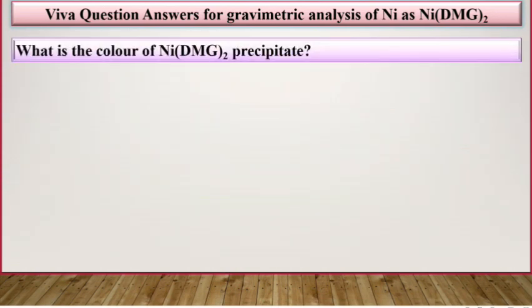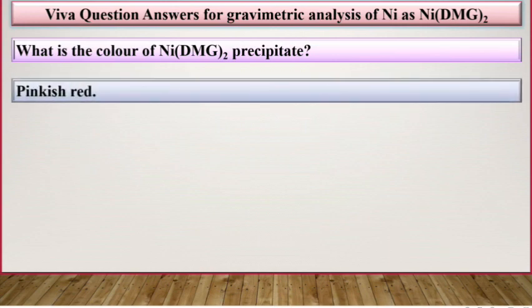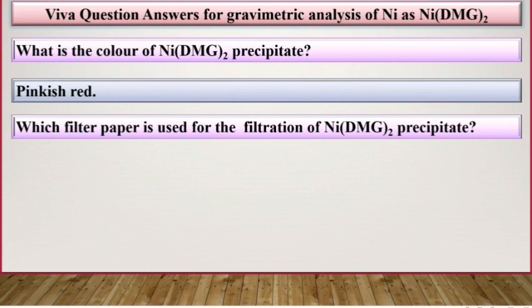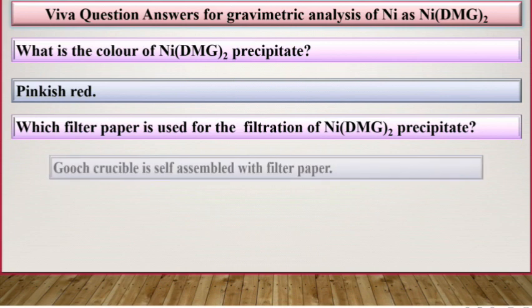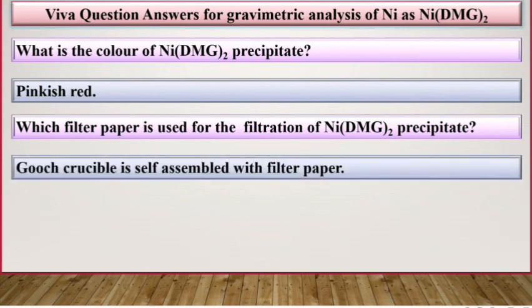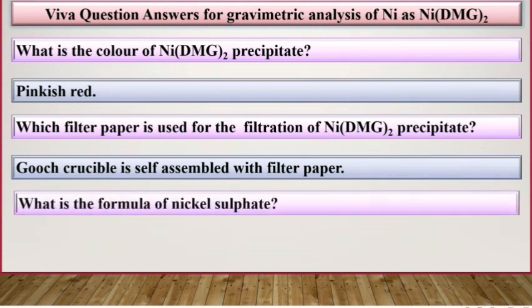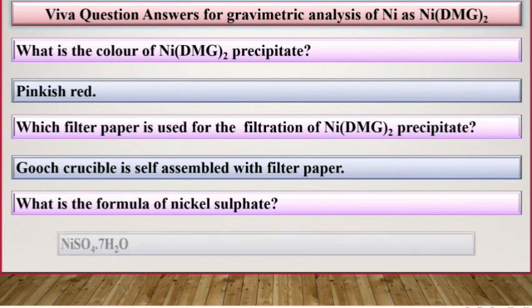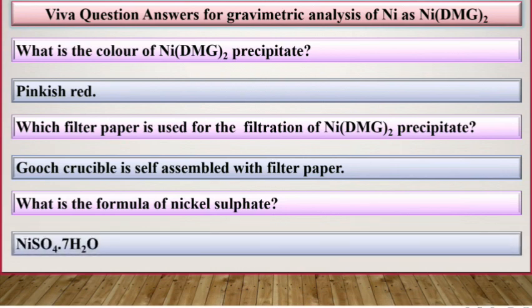What is the color of the nickel DMG precipitate? It is pinkish red in color. Which filter paper is used for the filtration of nickel DMG precipitate, and which crucible is assembled with filter paper? What is the formula of nickel sulfate? It is NiSO₄·7H₂O.